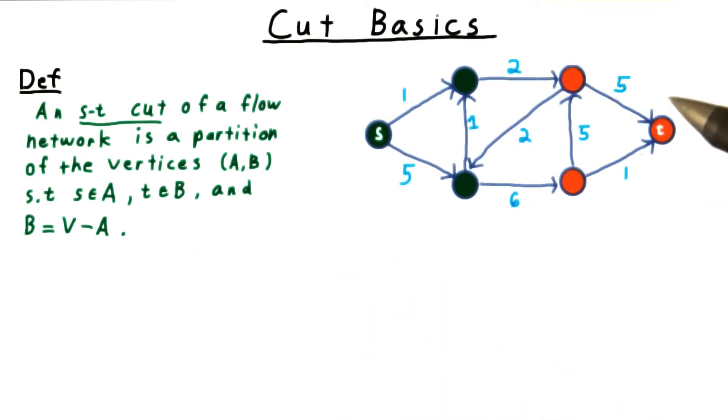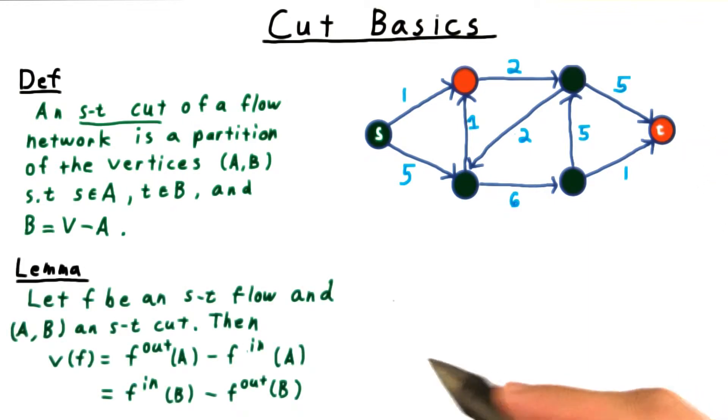For example, in this network here, the green nodes might be A and the orange ones B. Or we might have this cut here. The vertices within one side of the partition don't have to be connected.